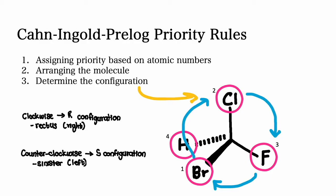Now visualize the order of the priorities looking from the highest to the lowest priority group. If the order is clockwise, then an R configuration is associated to it.